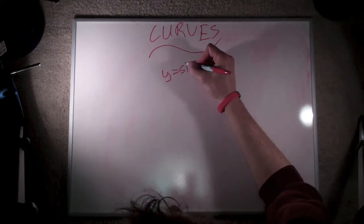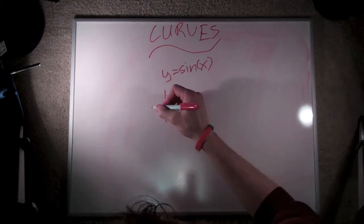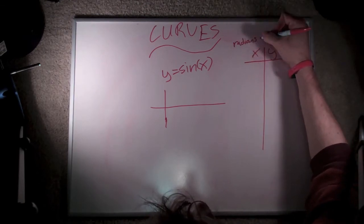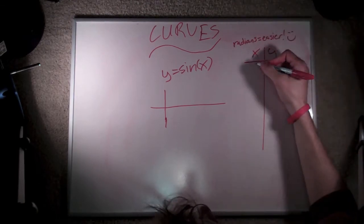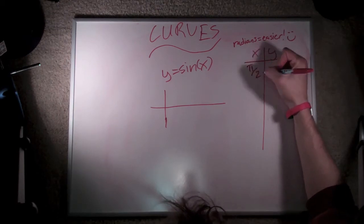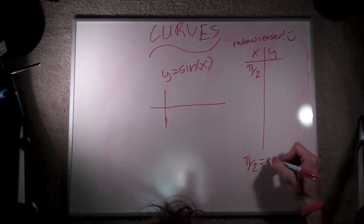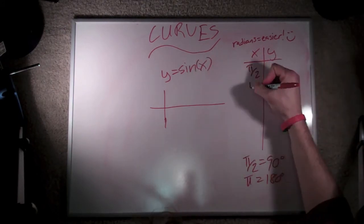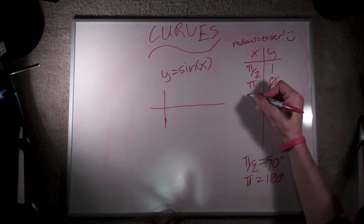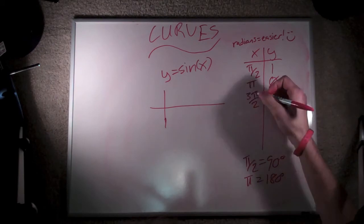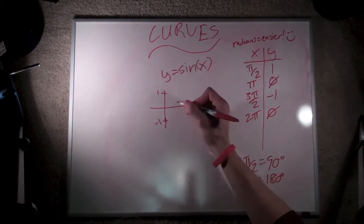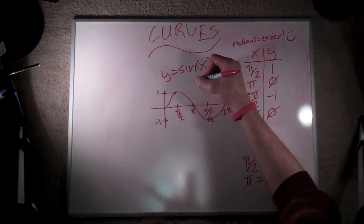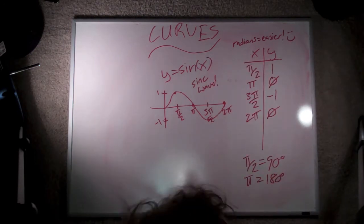Now let's go to curves. This is an equation I'm sure a lot of us remember from high school math class: y equals sine x. I'm going to map out our variables using radians because they're just easier than degrees. When x is equal to pi over 2, which is equivalent to 90 degrees, y is going to equal 1. When x is equal to pi, which is 180 degrees, y is equal to 0. When x is equal to 3 pi over 2, which is 270 degrees, y is equal to negative 1. And when x is equal to 2 pi, y is equal to 0. If I graph this out, I wind up with the sine wave, which is a nice repeating curve.